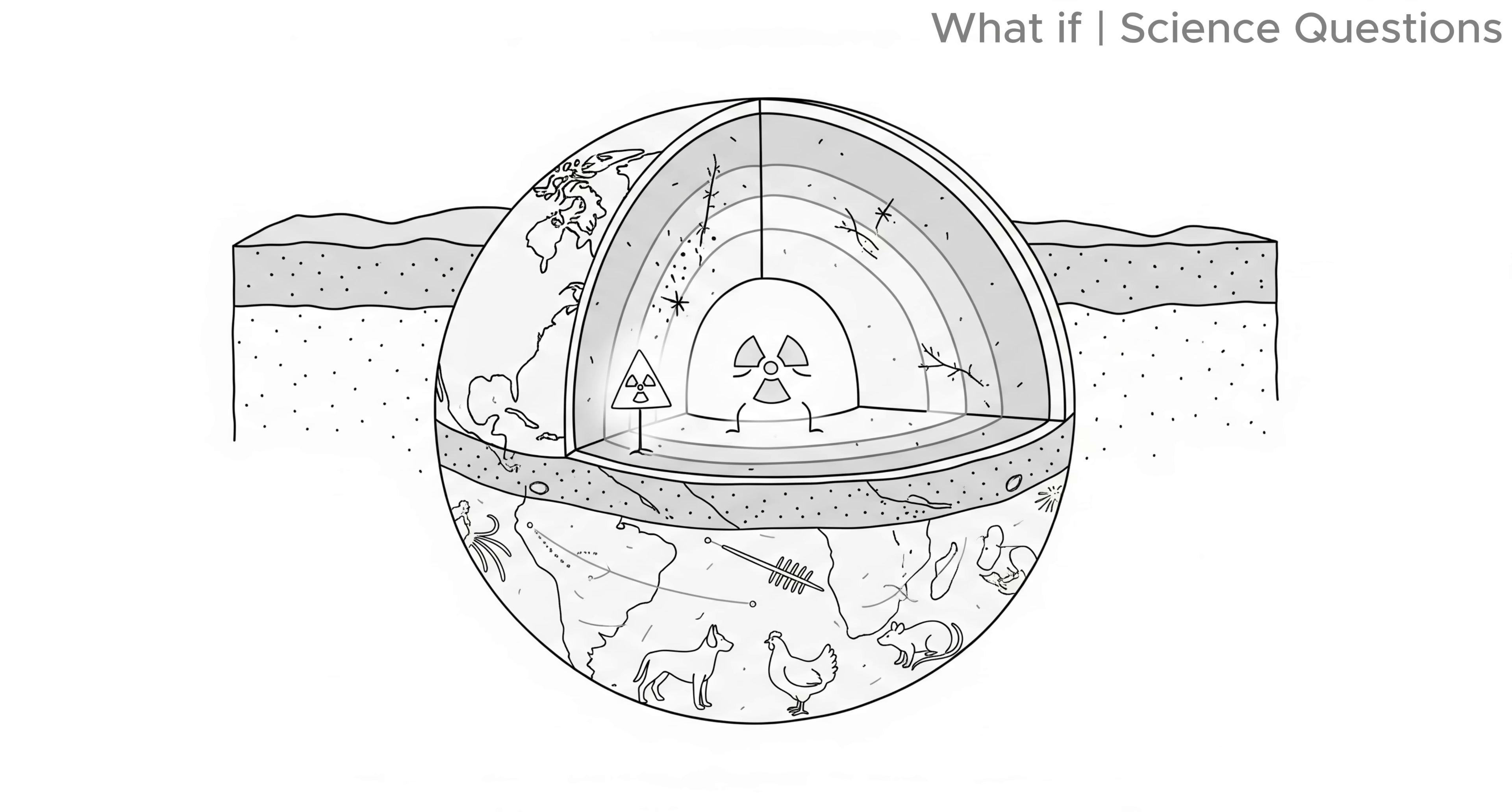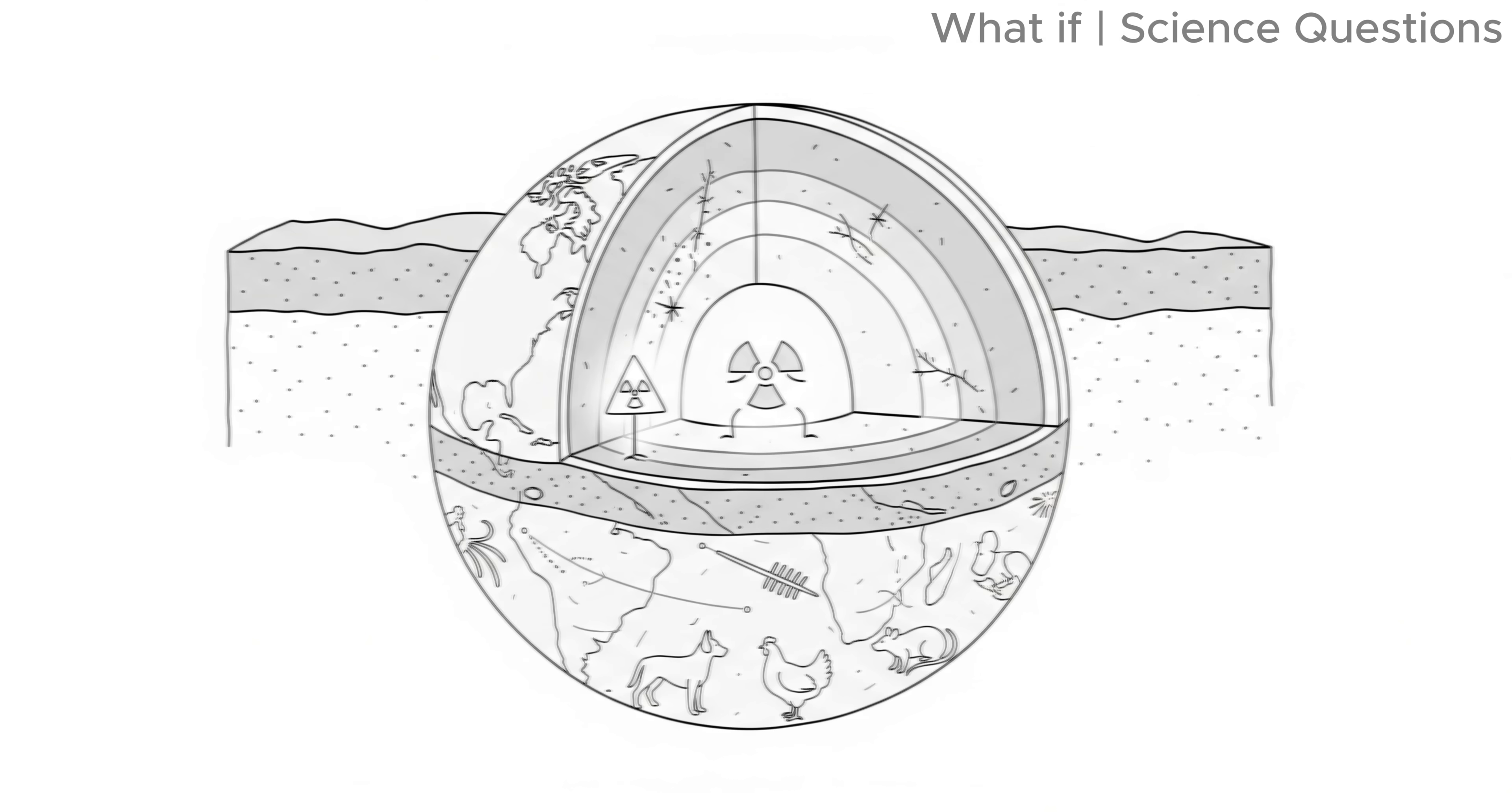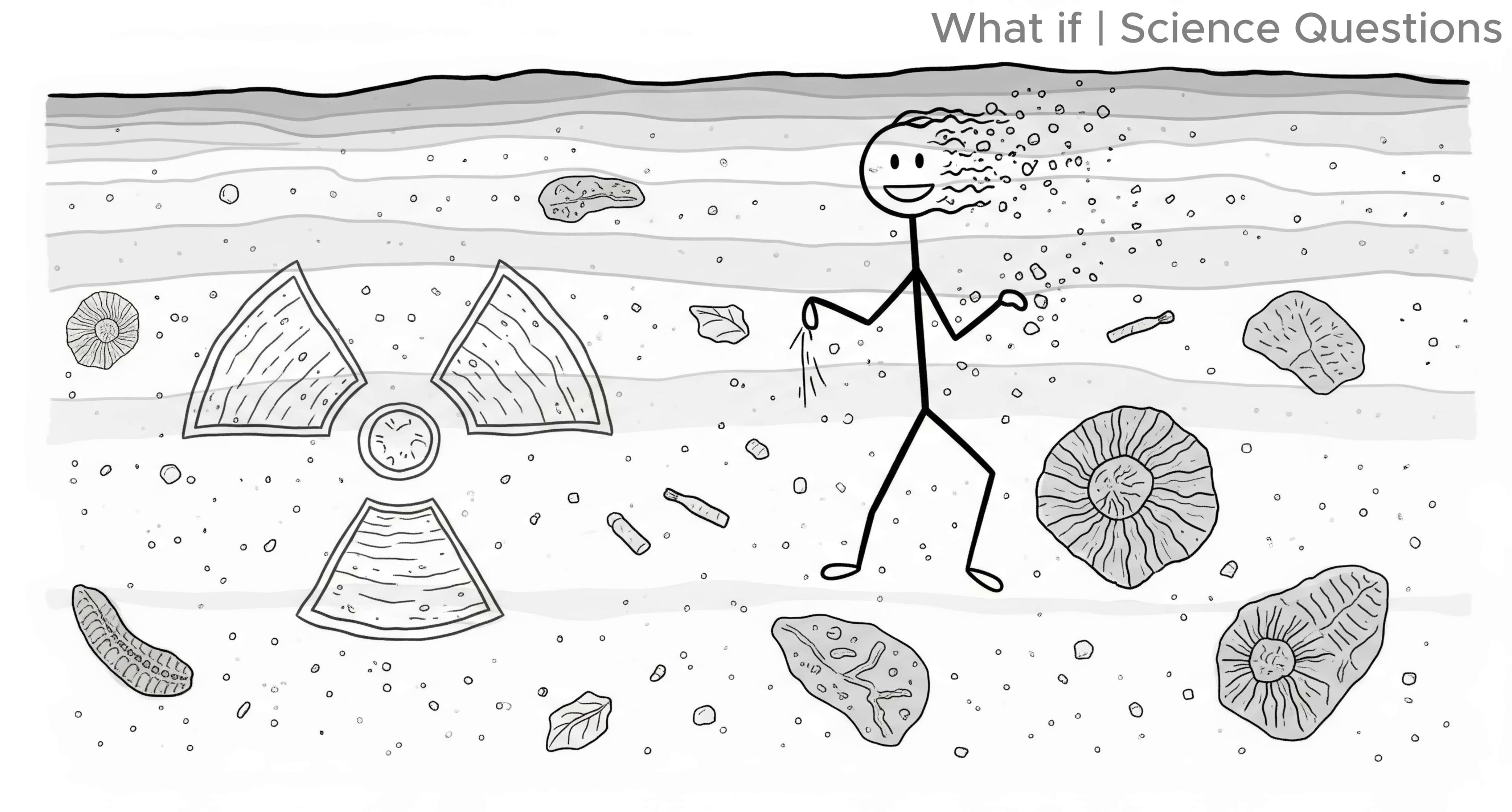Our technology scattered atoms in the soil. The only faint clues might be underground. Radioactive isotopes from nuclear weapons. Unusual layers of plastic particles. And perhaps fossils of modern animals shaped by our existence. But even these would be subtle. And over millions of years, even they would fade.